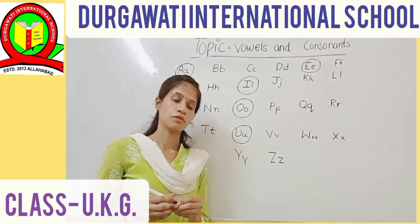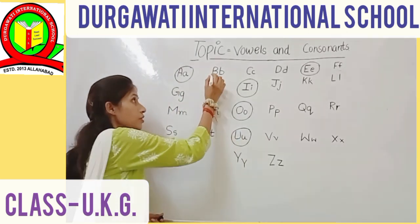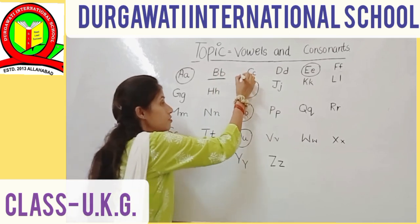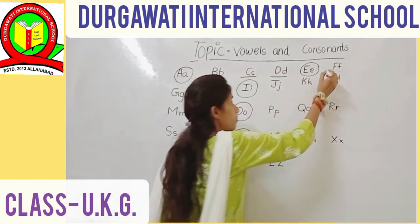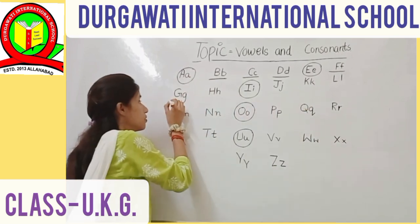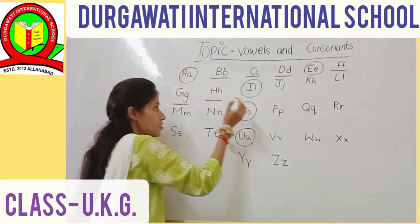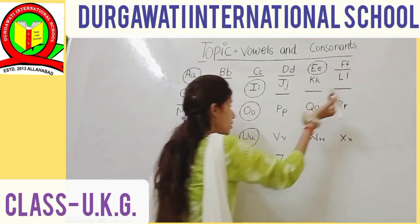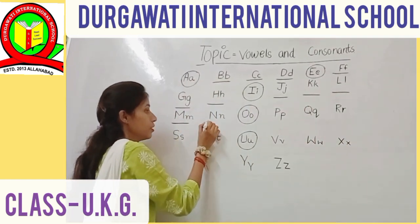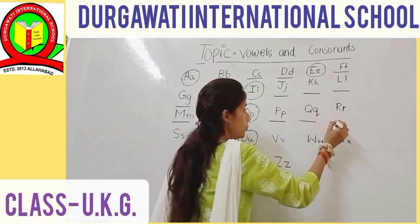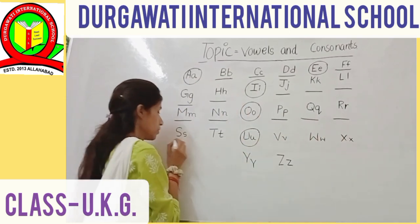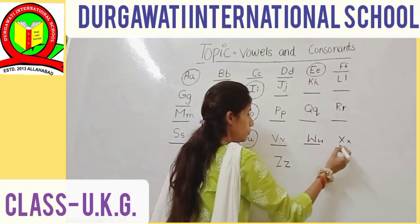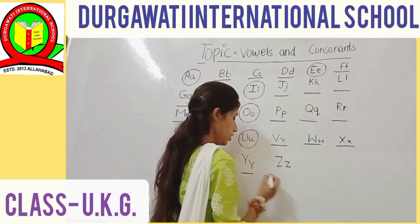So we underline the consonants. B, C, D, F, G, H, J, K, L, M, N, P, Q, R, S, T, V, W, X, Y, Z.